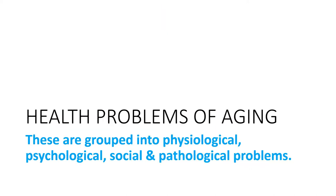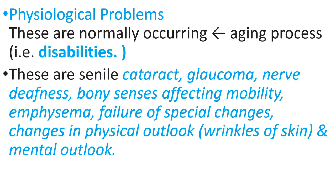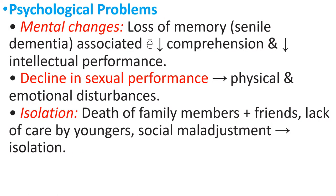Health problems of aging are grouped into physiological, psychological, social, and pathological problems. Physiological problems include disabilities such as senile cataract, glaucoma, nerve deafness, bony changes affecting mobility, emphysema, failure of spatial changes, wrinkles of skin, and changes in mental outlook. Psychological problems include mental changes, decline in sexual performance, isolation, loss of memory due to senile dementia, decreased comprehension, and decreased intellectual performance. Decline in sexual performance leads to physical and emotional disturbances. Isolation due to death of family members and lack of care leads to social maladjustment.